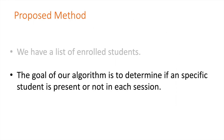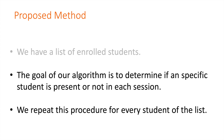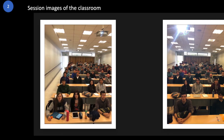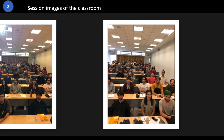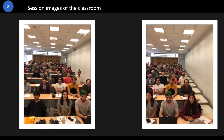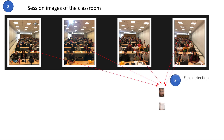The goal of our algorithm is to determine if a specific student is present or not in each session. We repeat this procedure for every student on the list. These are the session images of the classroom. In this example, we have four different images. For all of them, we detect the faces, and for every detected face we extract the features.